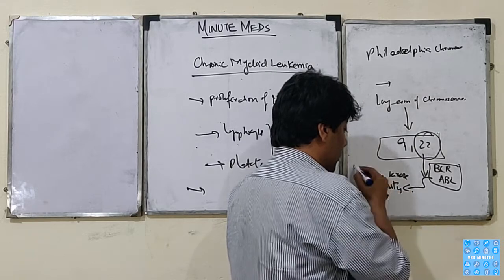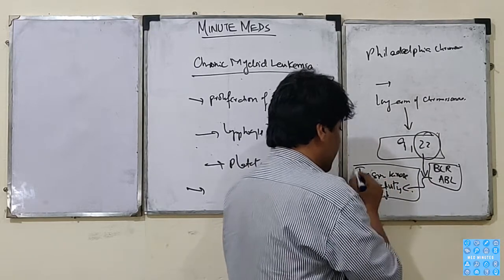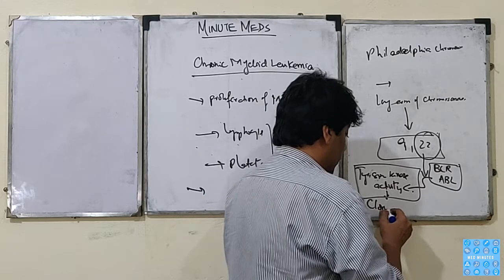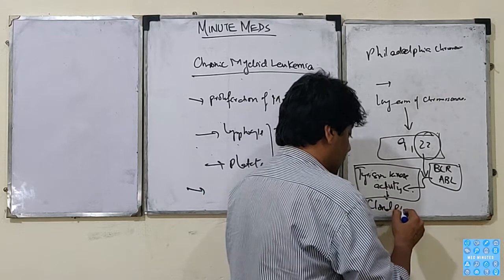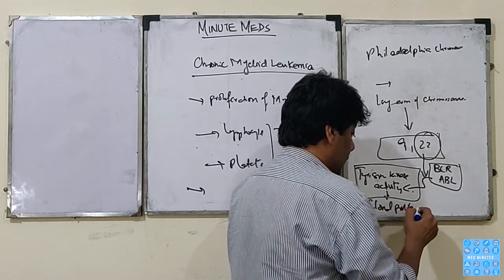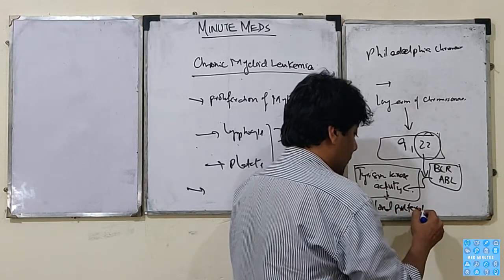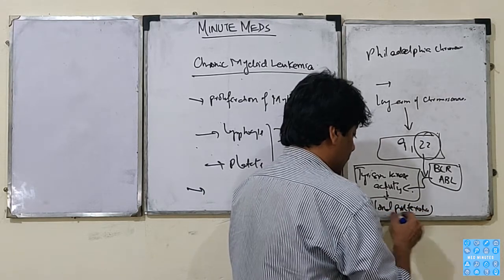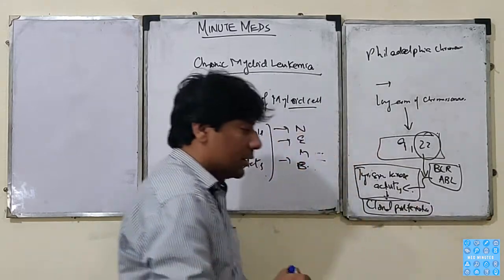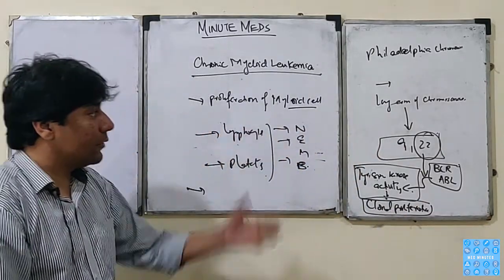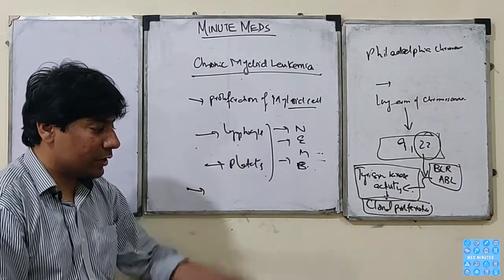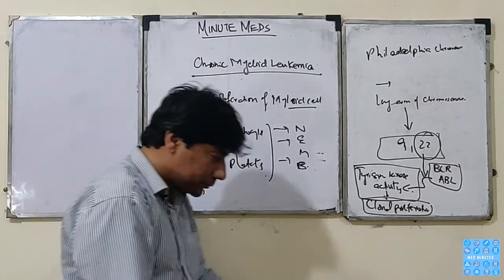This BCR-ABL gene has tyrosine kinase activity, and this leads to clonal proliferation. There is proliferation of the myeloid cells, and then you get the symptoms.